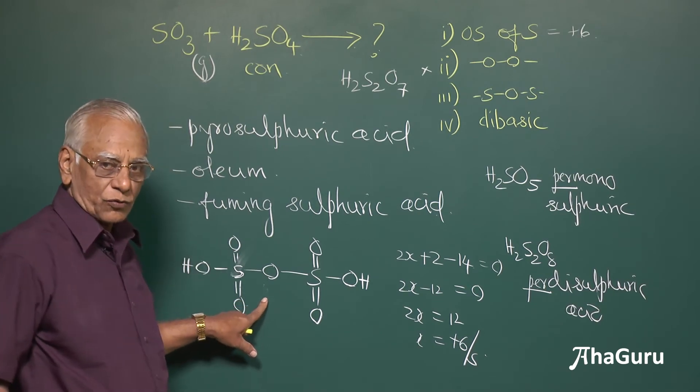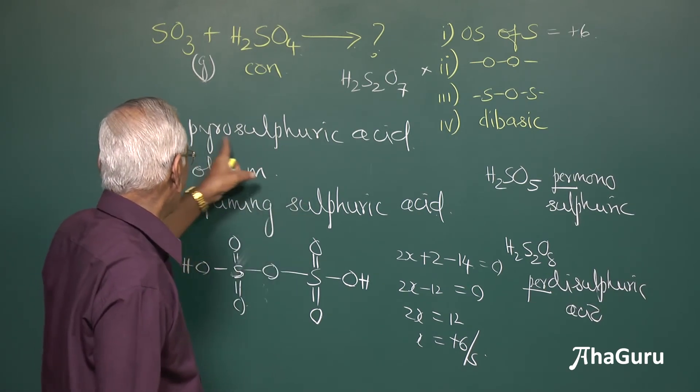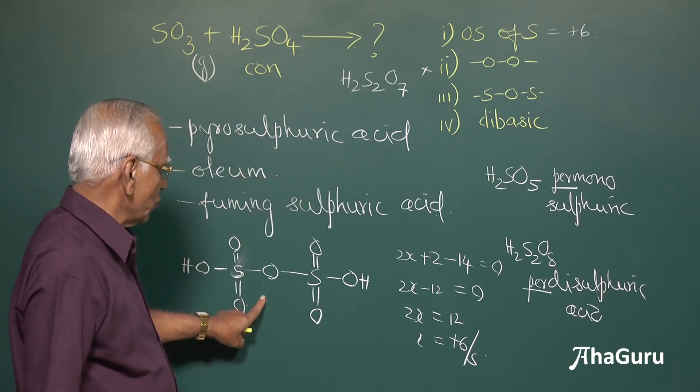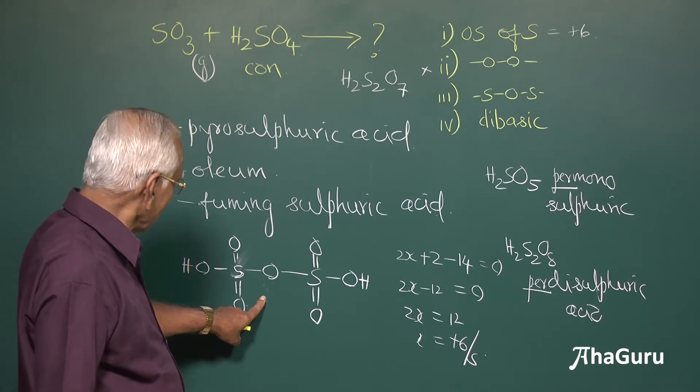How do you know it is dibasic acid? Because it reacts with the 2 moles, 1 mole of paradisulfuric acid, sorry, 1 mole of pyrosulfuric acid requires 2 moles of sodium hydroxide for complete neutralization.